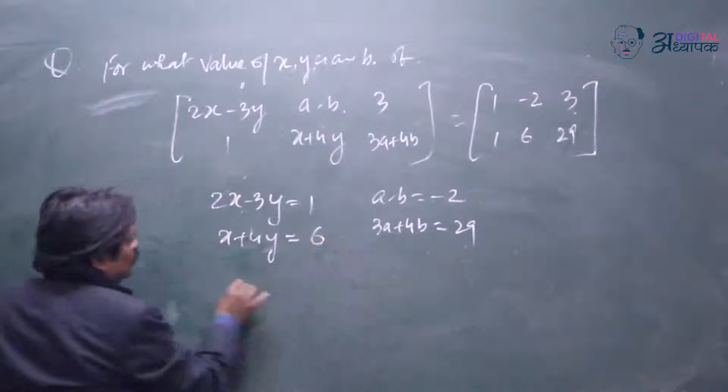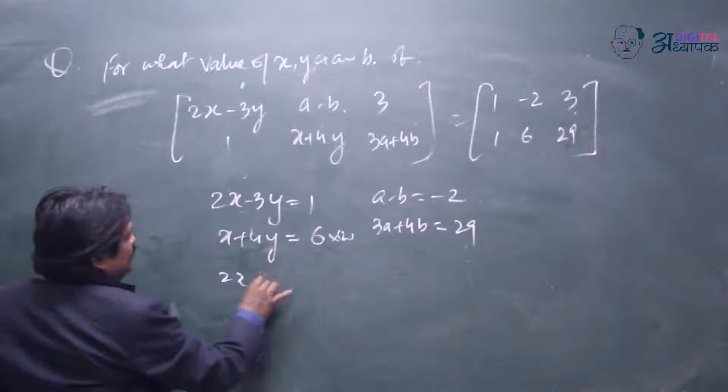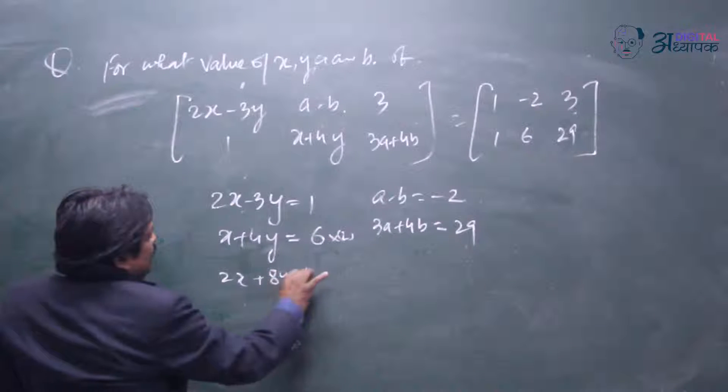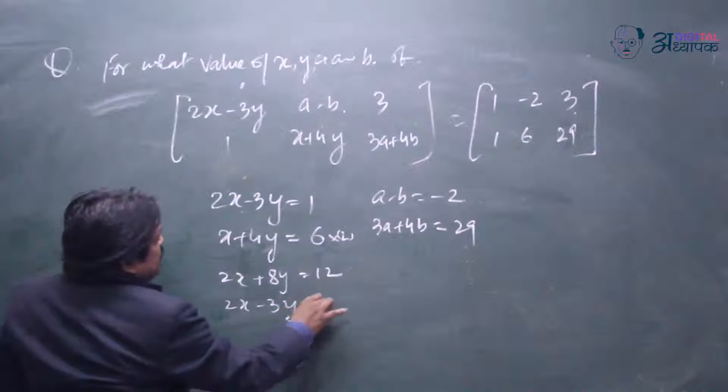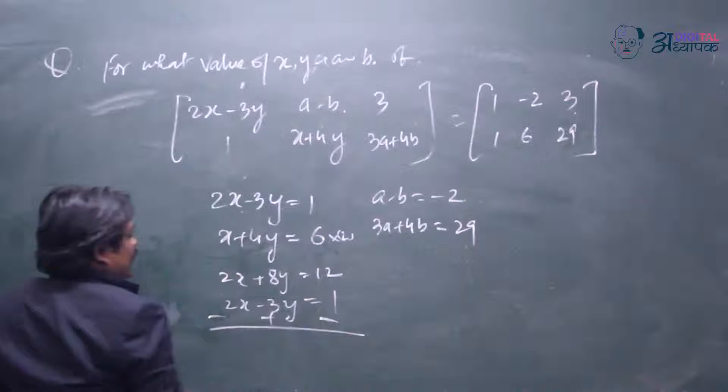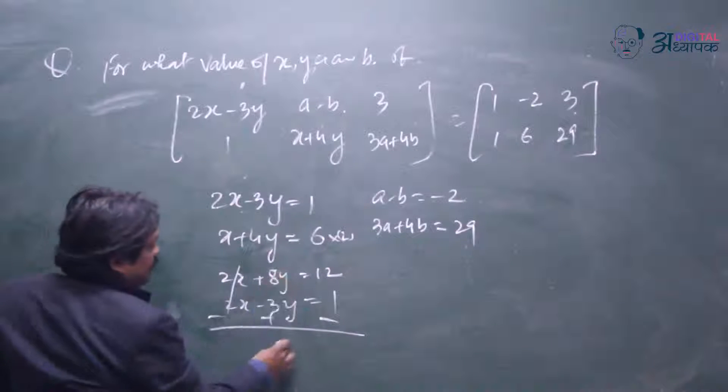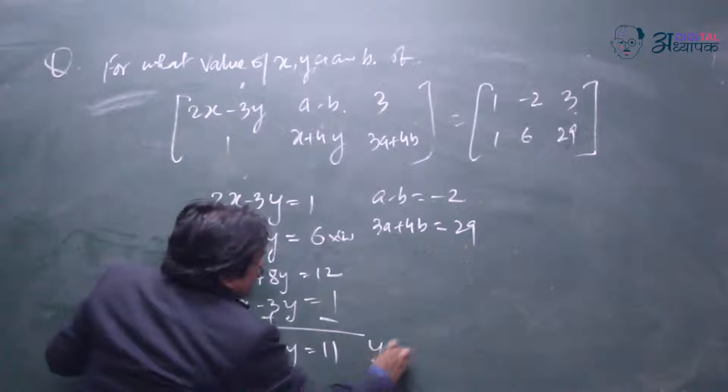We multiply by 2. So we get 2x plus 8y equal to 12. And then we have 2x minus 3y is equal to 1. We have to subtract the equations. And we get 8y plus 3y, 11y equal to 11. So y is equal to 1.